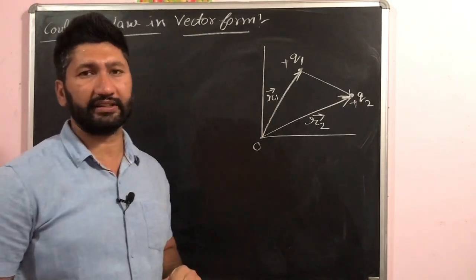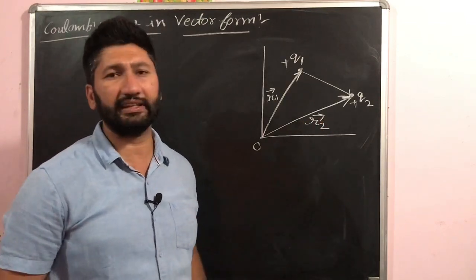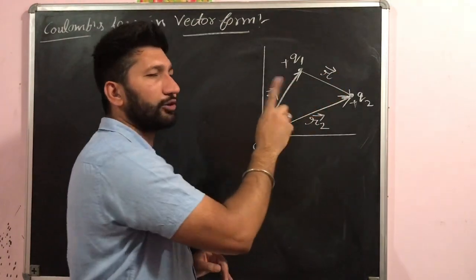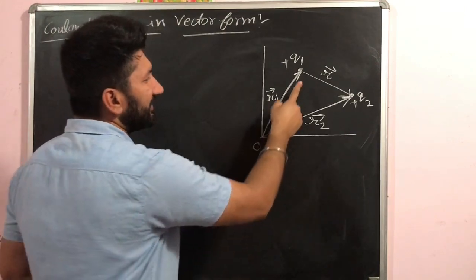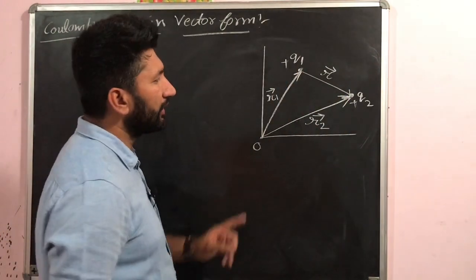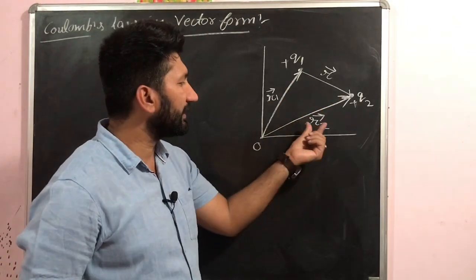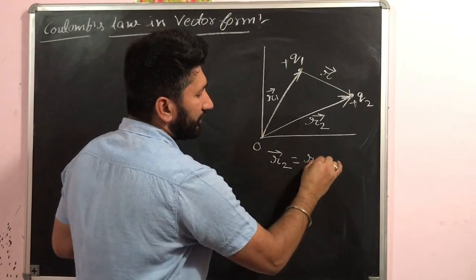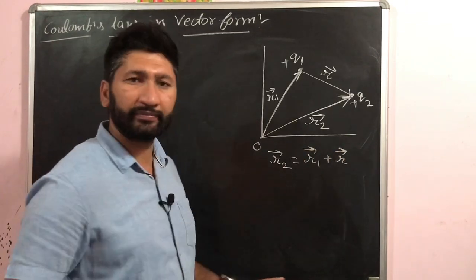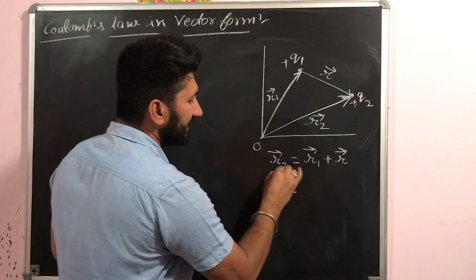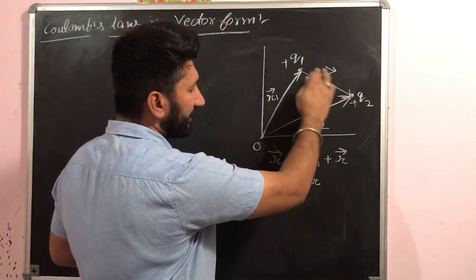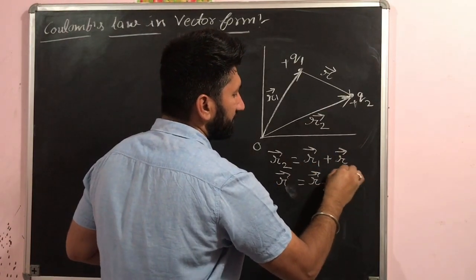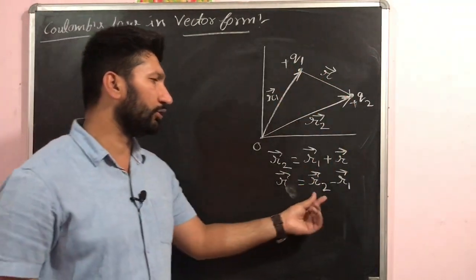Using the triangle's law of vector addition for the displacement vector R: R2 vector = R1 vector + R vector. Therefore, R vector = R2 vector − R1 vector. This gives us the value of the displacement vector between the two charges.